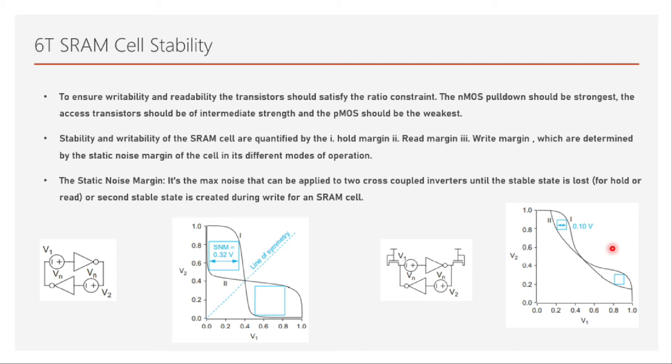Another way to improve read margin is to increase Vdd or the threshold voltage. Increasing Vdd increases total power consumption, which is a power problem. Increasing the threshold voltage Vt will reduce performance — that is, speed will go down. These are the trade-offs to fine-tune and achieve a good noise margin alongside acceptable power, area, and performance.